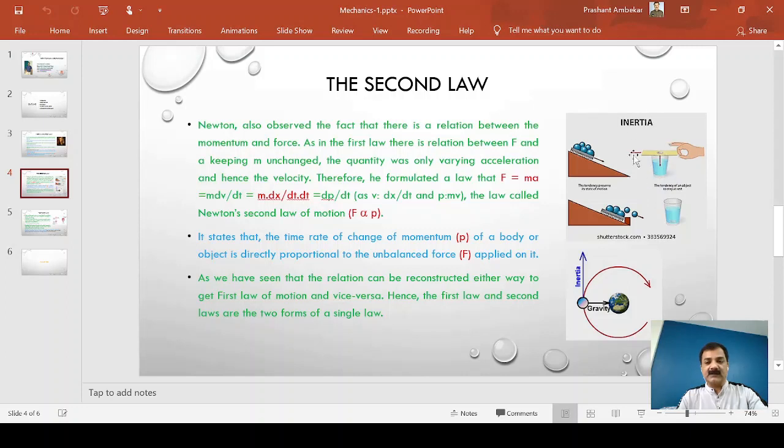Now, there is one example of this inertia. If you have a coin put on the paper, and the paper is on a glass, and you just remove that paper with a certain force instantaneously, the coin will drop down into the glass and not go along with that paper. So, this is the tendency of the body, which is known as inertia.